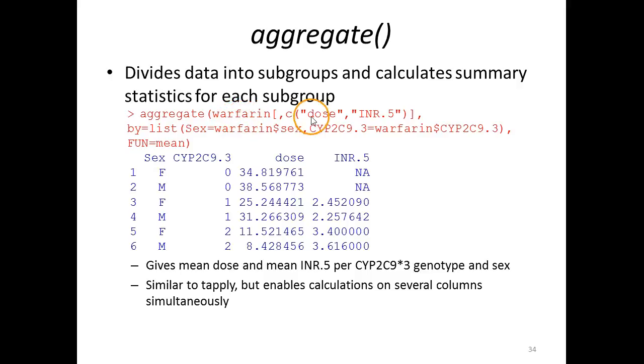In this case, we would like to calculate the mean values of dose and INR5 for patients grouped according to sex and the CYP2C9 dot 3 allele.